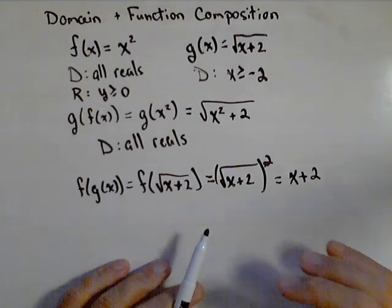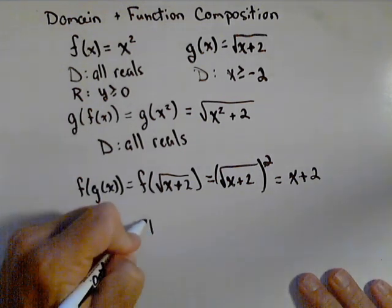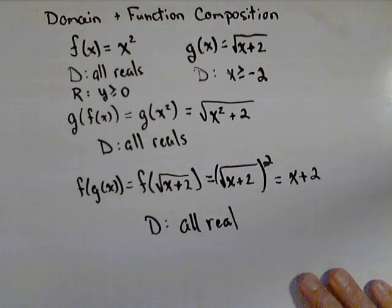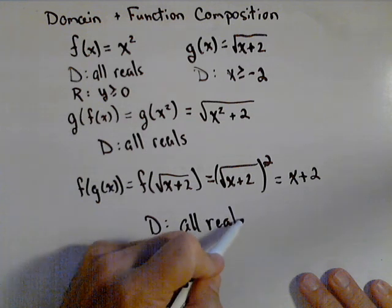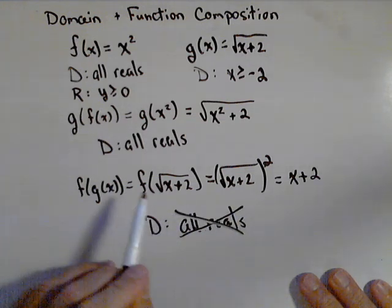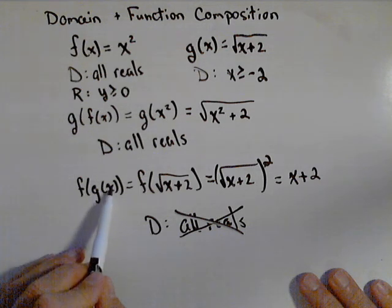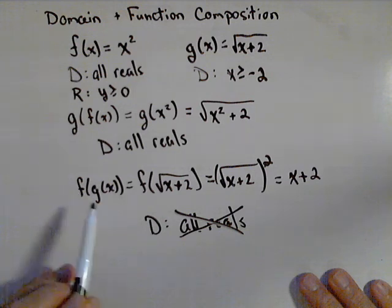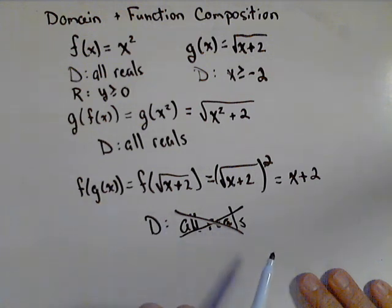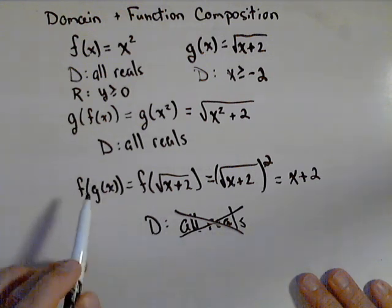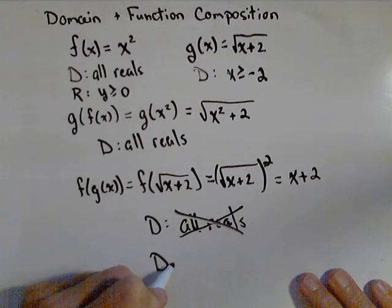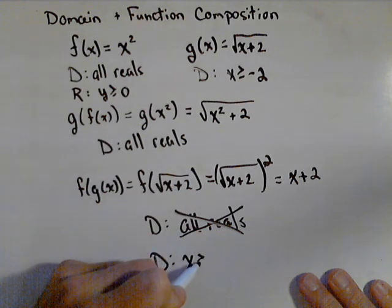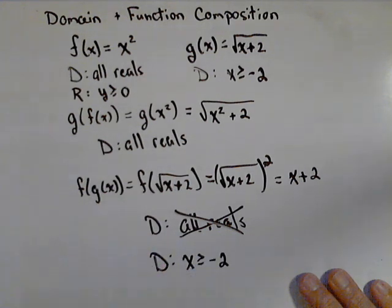Now, we know the function x plus two has a domain of all reals. But, we're doing a composition. So this does not work for our composition. Because what happens in a composition is x has to go into g first, and then into f. So, while this function doesn't have any domain restrictions, the composition does. So our domain is gonna have to actually be the domain that it was for g, which is x is greater than or equal to negative two.